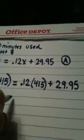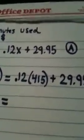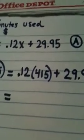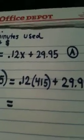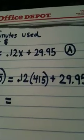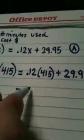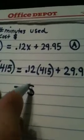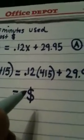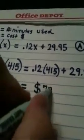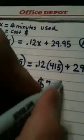And I pull out my handy-dandy calculator, and I multiply .12 times 415 and I add in 29.95. And let me read off my calculator here. I'm coming up with $79.75.